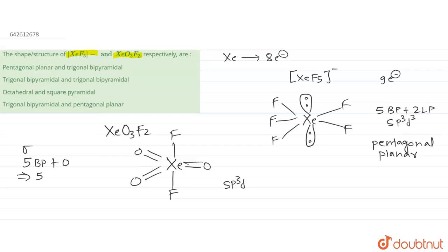So which option is going to be the correct answer? Its geometry will be trigonal bipyramidal. So we have to find the option which is matching with this one. First is XeF5⁻, so pentagonal planar, and trigonal bipyramidal. This is given in your option number one only, so this will be the correct answer. I hope this answers your question. Thank you.